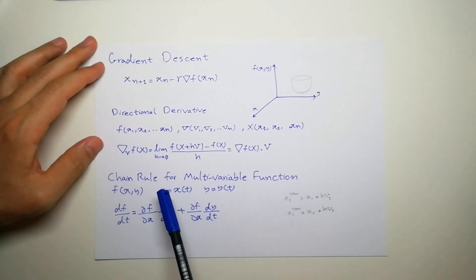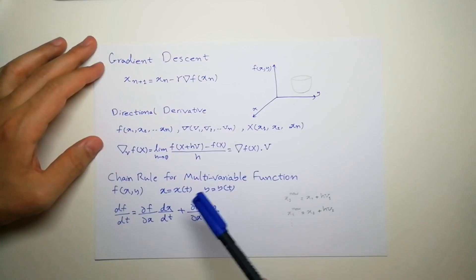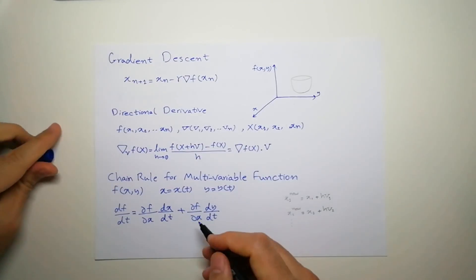And why this equals this, we have to revisit the chain rule for multivariable functions. Let's say we have a function f that consists of x and y, and x and y, each one of them is a function of t. So the derivative of f relative to t is the derivative of f to x multiplied by the derivative of x by t, and same goes for y.